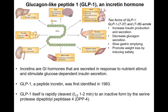GLP-1 has effects on fat cells, the kidney, blood vessels, the brain, the heart, and the pancreas. In terms of diabetes, the main effects are: the hormone increases insulin production and secretion in the pancreas, it decreases glucagon secretion, it slows down the emptying of the stomach, and it induces the feeling of satiety so you stop eating.